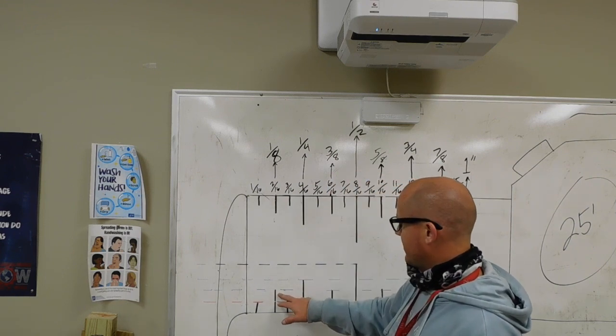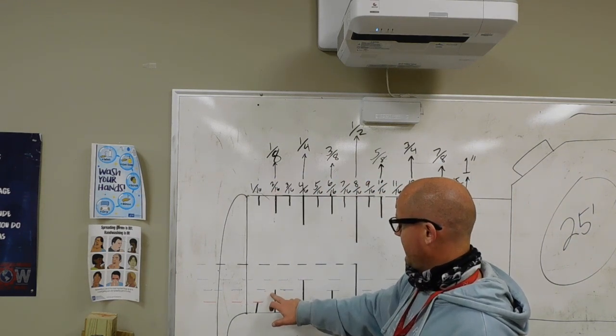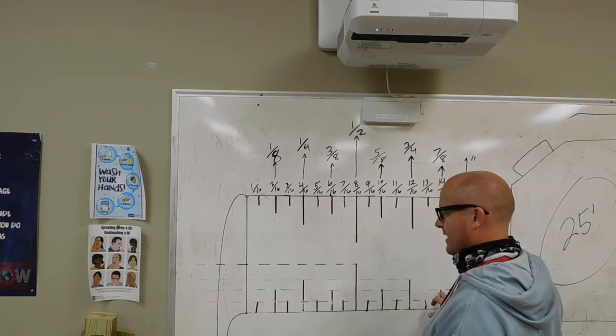The next one is considered an eighth right here. So this is one eighth, three eighths, five eighths, seven eighths.